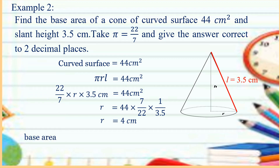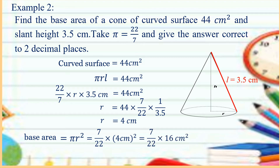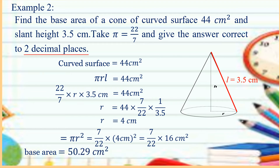Now we compute the base area. Base area is equal to pi R squared. Substituting the value of R and pi, we get 22 over 7 times 4 cm squared. Since 4 squared is 16, we have 22 over 7 times 16 square cm. Simplifying, the base area is equal to 50.29 square cm, corrected to 2 decimal places.